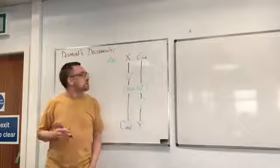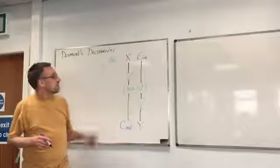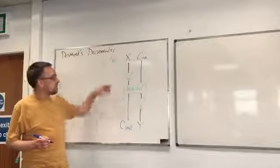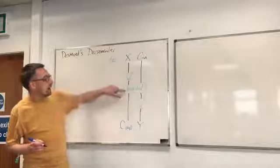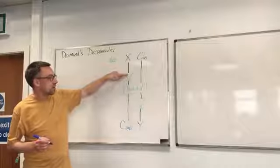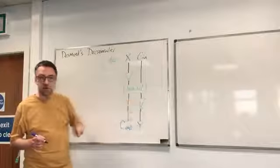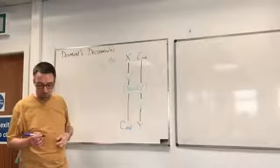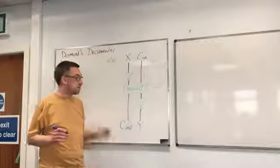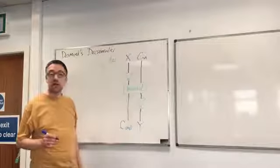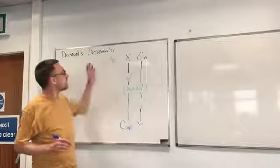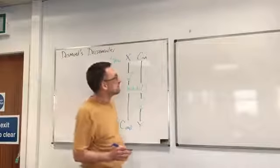Let's do the homework question about Desmond's decrementor. This is Desmond's decrementor circuit and it's made from a half adder with a NOT gate on one of the inputs and another NOT gate on one of the outputs. The question asks us first to give the truth table for a half adder and then use that to figure out the truth table for Desmond's decrementor.